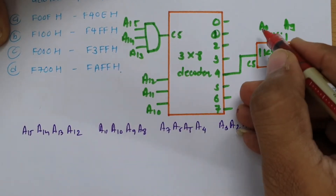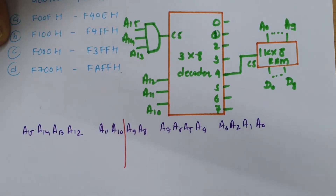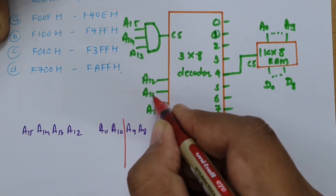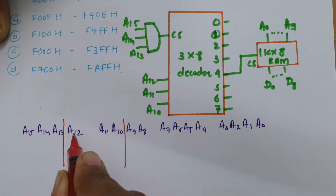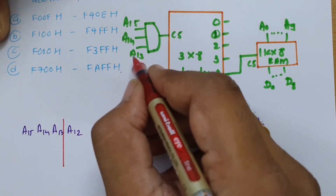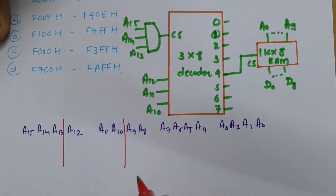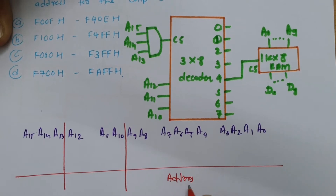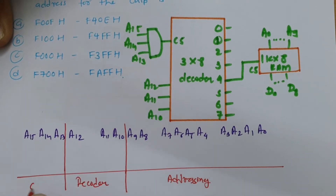Lines A0 to A9 are used for addressing the chip. Lines A10, A11, and A12 are connected to the decoder for decoding. Lines A13, A14, and A15 are used for the chip select of the decoder. So we have three sections: addressing, decoder input, and chip select.